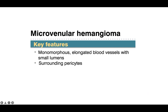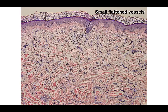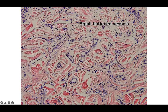Microvenular hemangioma: the name describes it — small thin-walled venules forming a total hemangioma. On histopathology you see monomorphous elongated blood vessels with small lumens and surrounding pericytes around each thin-walled vascular structure. At low power these small flattened vessels are almost difficult to appreciate — you'll notice the pink collagen strands and then the more basophilic-staining endothelial cells as very small flattened spaces within the collagen.